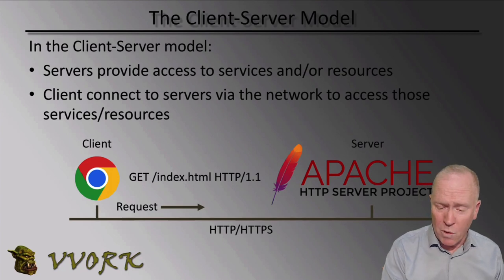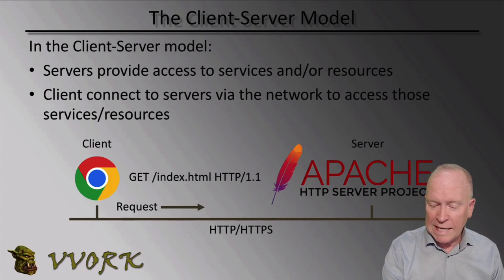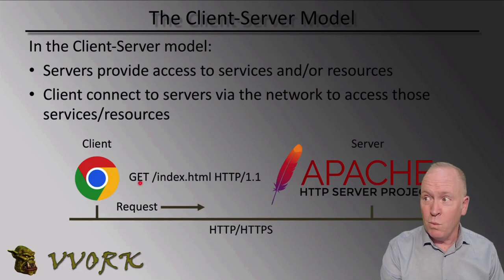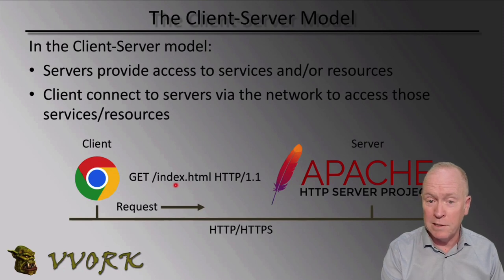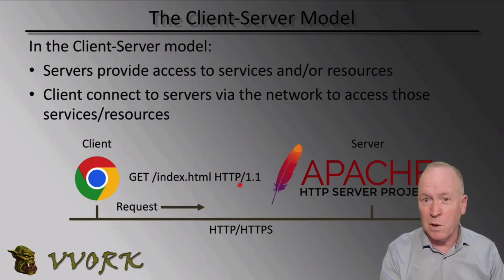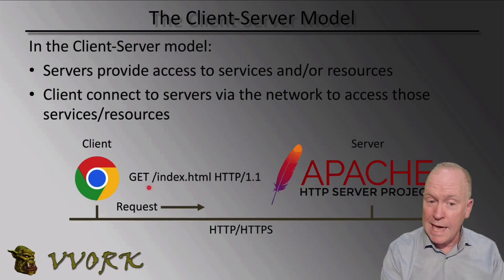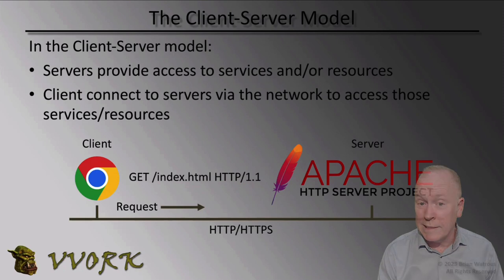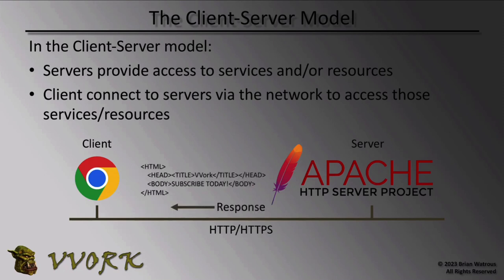In our web browser example, when we request a web page, we're using GET as the HTTP method because the web page already exists on the web server — we just want to get it. In order to get it, we specify a URL that indicates where on the web server the file resides. So the request contains a method and a URL, which gets sent from the web client to the web server.